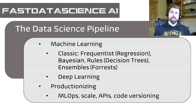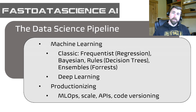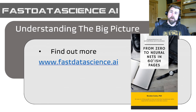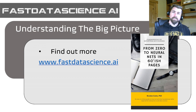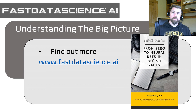That's the last piece of the data science lifecycle or pipeline. Having some sense of all these different skills will really go a long way in supporting how we think about the way data science applies to the bigger business picture. If you want to explore this further, I go through this entire pipeline with an example business case in my book, 'From Zero to Neural Nets in 60-ish Pages,' available at fastdatascience.ai. Thanks for watching — feel free to include questions or comments with this video.